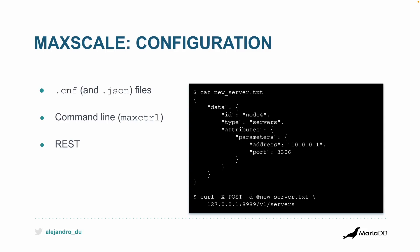MaxScale also has a REST service. For example, using curl from the command line you can add node four at IP 10.0.0.1 port 3306 by posting a JSON object. You can also call this REST service from your own application to automate configuration or make things dynamically configurable.